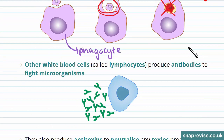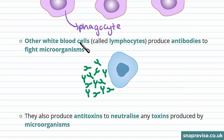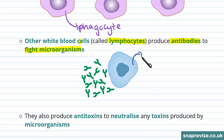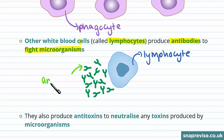Other white blood cells such as lymphocytes produce antibodies, which help fight microorganisms. This is an example of a lymphocyte and these are antibodies. Antibodies are proteins — they bind to antigens on the surface of microorganisms to help identify and destroy them.